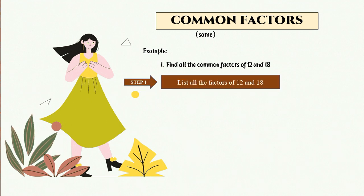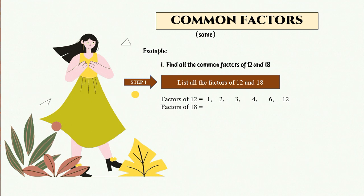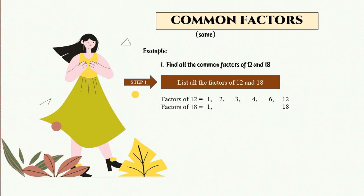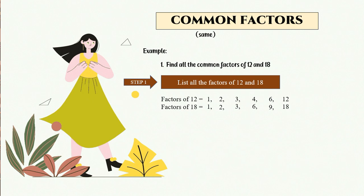Step 1: we list all the factors of 12 and 18. Remember how to find the factors of 12. Factor of 12: 1 times 12, 2 times 6, 3 times 4 — and no more. Factor of 18: 1 times 18, 2 times 9, 3 times 6 — and no more. This is the fastest way to list the factors, or you can also use the division method.